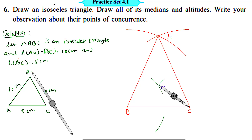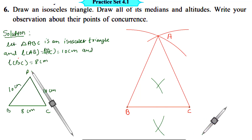Keeping the same distance in the compass, put the compass on point C and draw the arc intersecting the first arc. We get two points — name them point P and point Q. Join these points with a ruler to draw a line. Line PQ intersects side BC at point S. Therefore, point S is the midpoint of side BC. Then join vertex A to midpoint S. Therefore, segment AS is the median of triangle ABC.